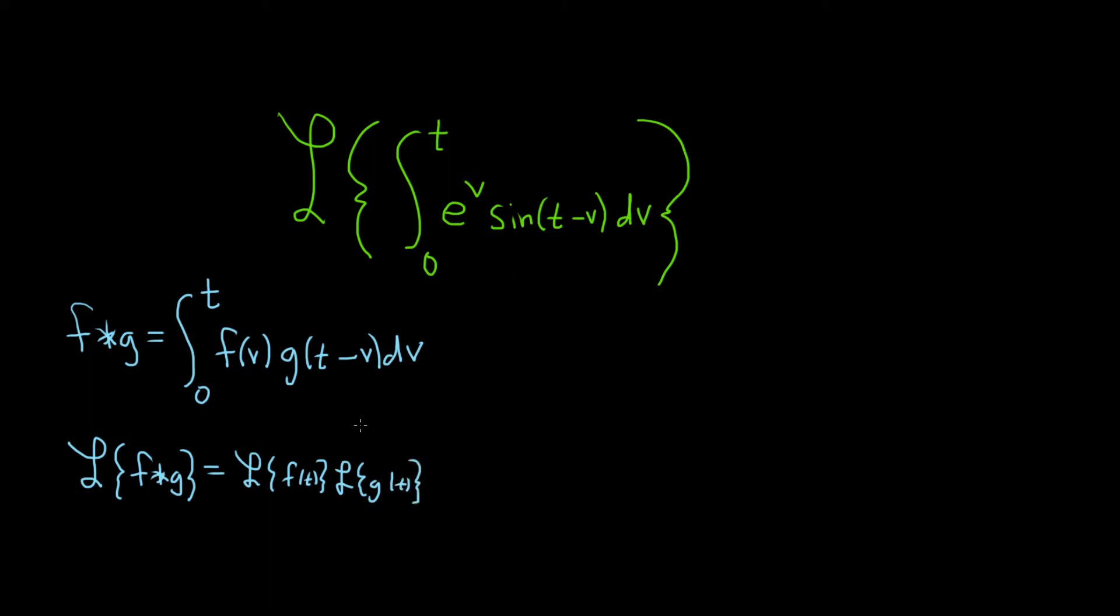So in this problem here we just have to identify what is our f and what is our g based on the definition of convolution, which is this one. And then we can use the convolution theorem, which is this one here.